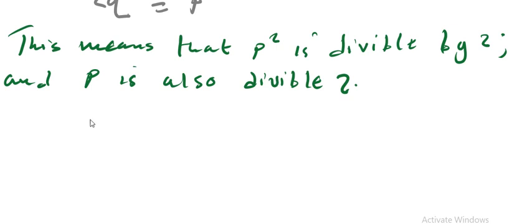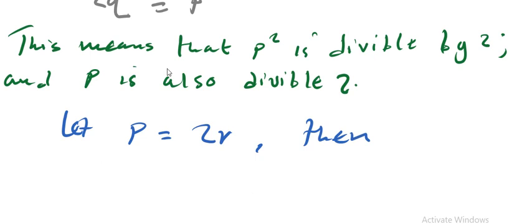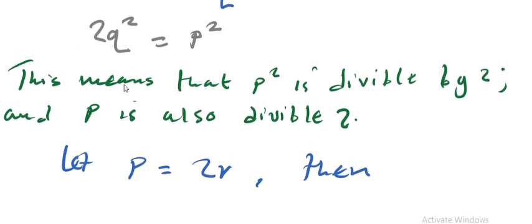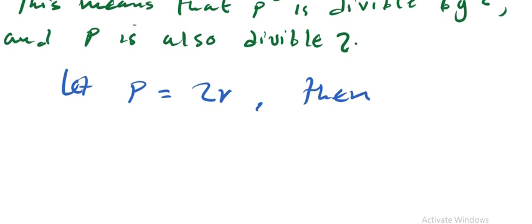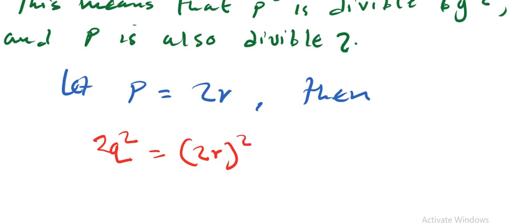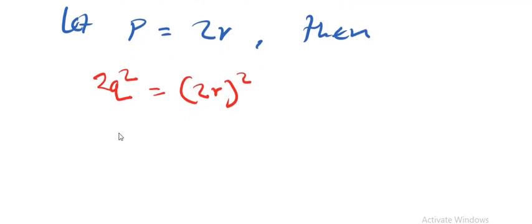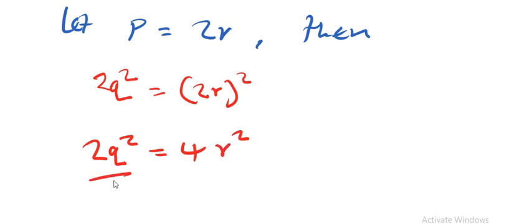Since p is divisible by 2, the next thing we are going to do is let p be equal to 2r. Then we replace p in the expression 2q squared equals p squared, and we get 2q squared equals (2r) squared, which gives us 2q squared equals 4r squared.